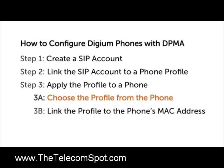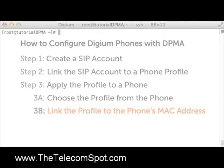The DPMA and Digium phones make this simple enough that anyone can do it. The second method uses MAC address authentication. With this method, the Asterisk server will know which profile belongs with which phone based on the phone's MAC address. When the phone starts up or is set to reconfigure, it will automatically fetch its configuration from the server without any user interaction at all.